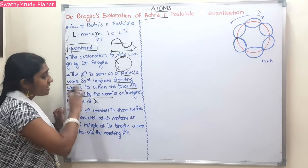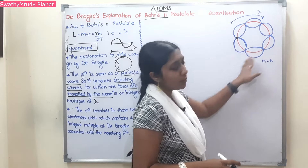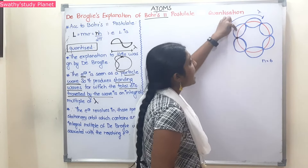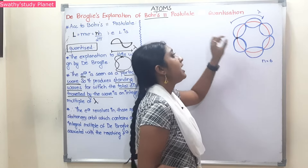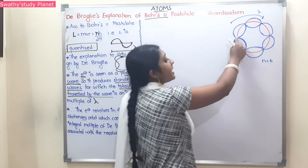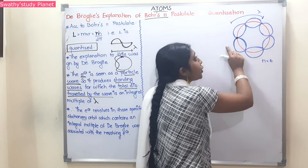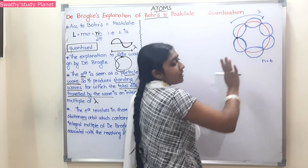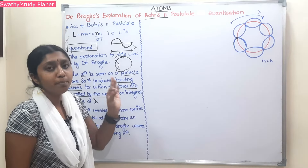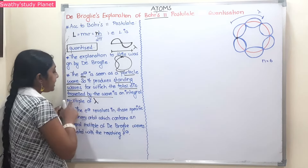This is the basic concept of the waves. There is an electron that revolves, and what does it produce? de Broglie waves. The total distance traveled by the wave along the circular path is 2πr, which is the circumference of the circle. This is equal to an integral multiple of lambda, the wavelength.